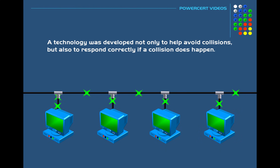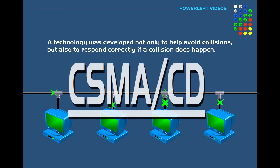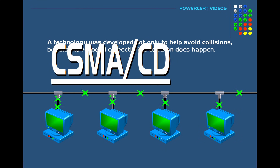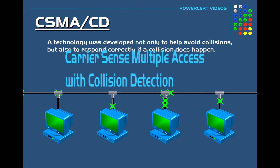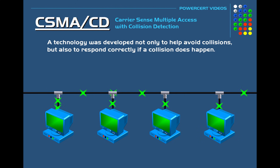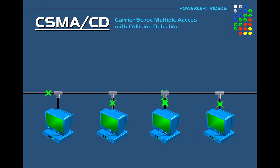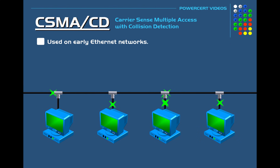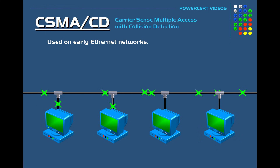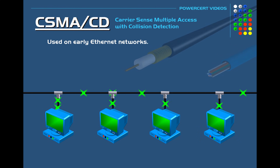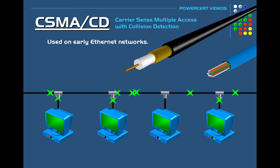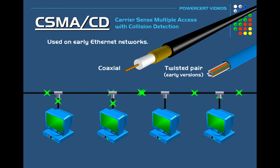This technology is called CSMA-CD, which stands for Carrier Sense Multiple Access Collision Detection. This is the access method used on early Ethernet networks — specifically half-duplex networks that utilize coaxial cable and earlier versions of twisted pair cable.